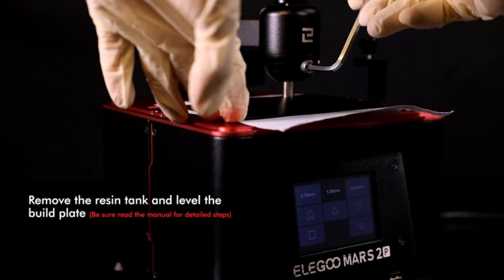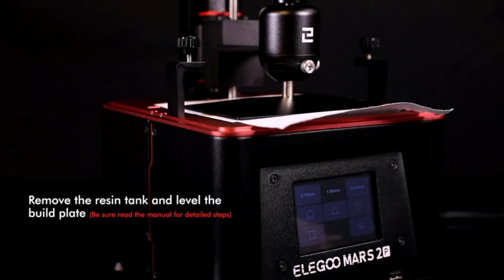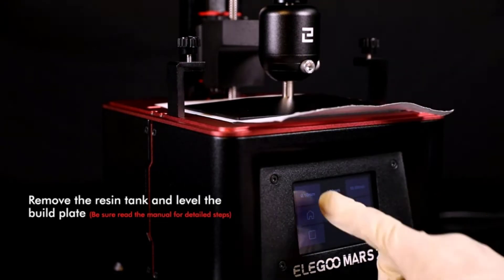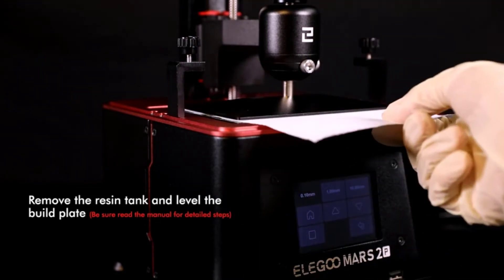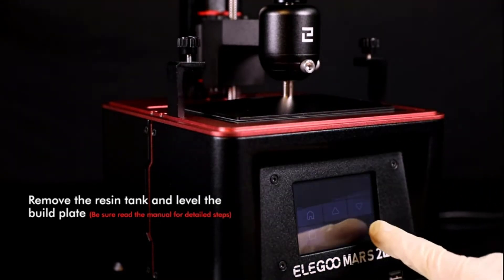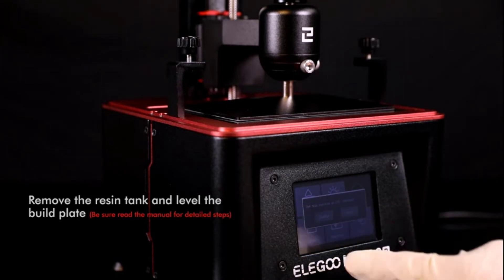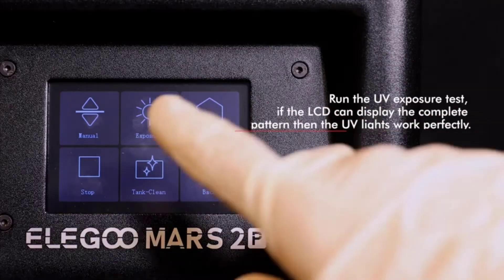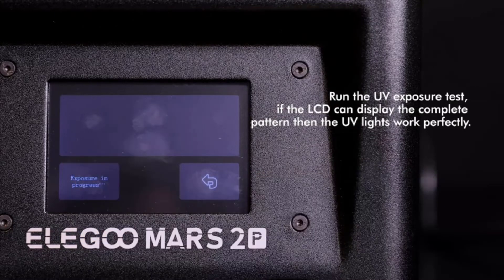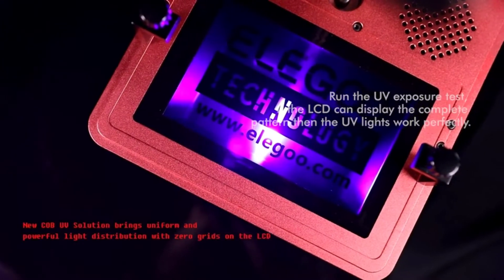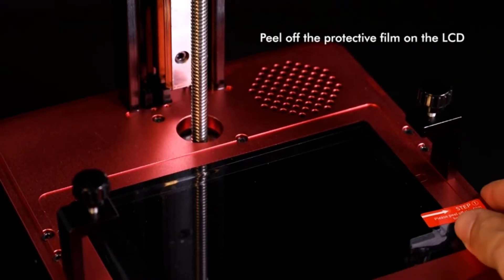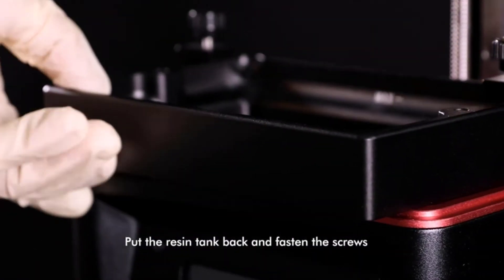But the higher resolution on the Mars Pro LCD curing screen is spread across a larger build area, so the pixel density is reduced. As such, you'll find an XY resolution of 50 microns on the Elegoo Mars 2 Pro versus 47 microns on the Mars Pro. Despite the lower resolution, the pixel density is actually slightly greater, granted the difference is likely not noticeable.